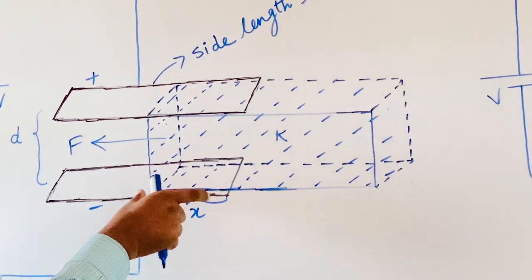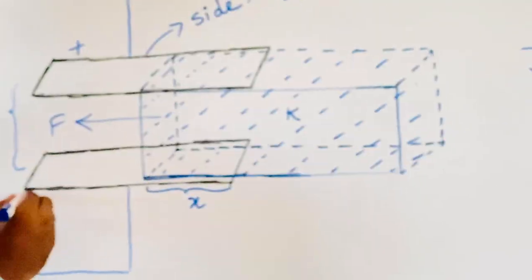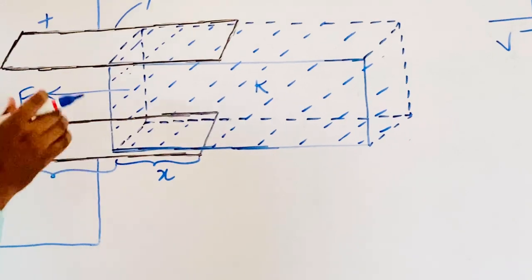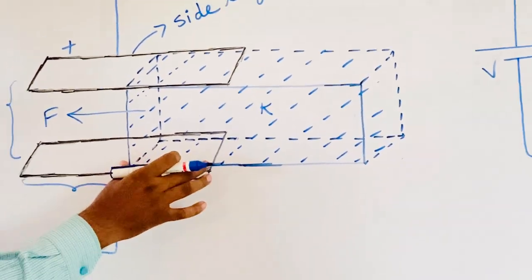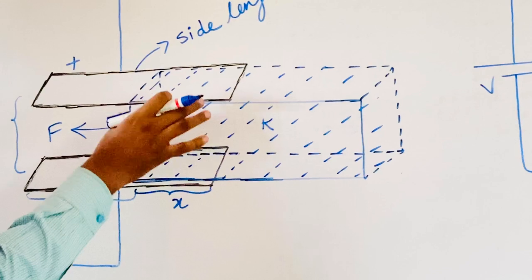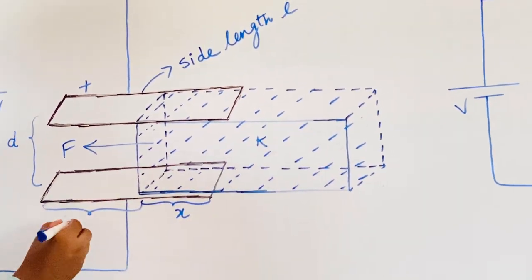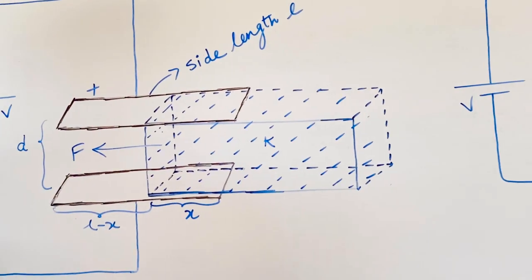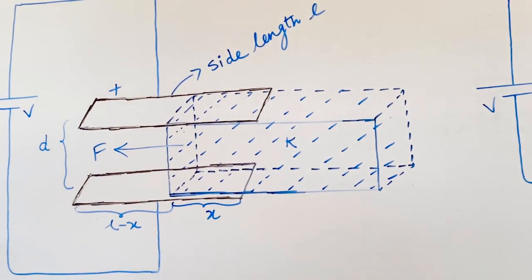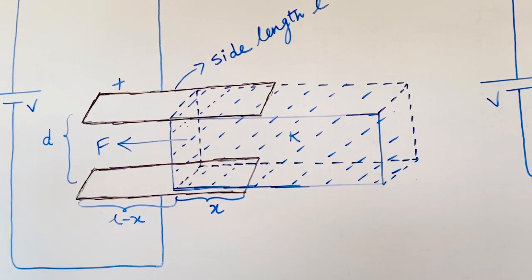Since x-length of the dielectric is introduced between the plates of the capacitor, the remaining free length — at some time we want to see total length L. Out of that L, x-length is now filled by this dielectric with dielectric constant K. What is the remaining length? Remaining length is L minus x.